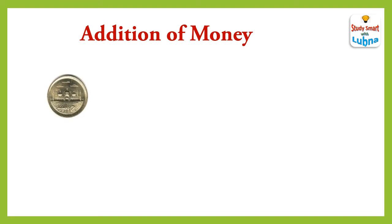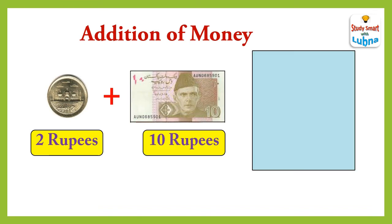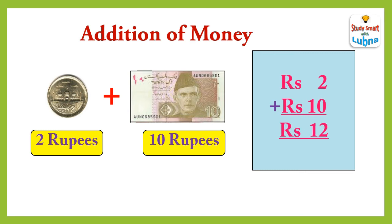When we add 2 rupees coin with 10 rupees note, what will we get? Let's see. Rupees 2 plus rupees 10 — when we add them, we will get rupees 12.